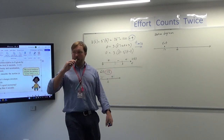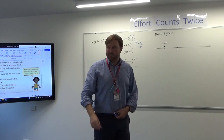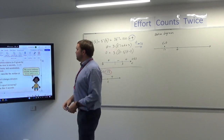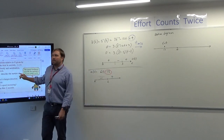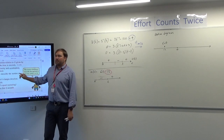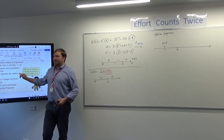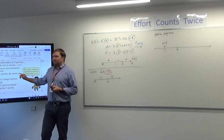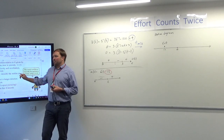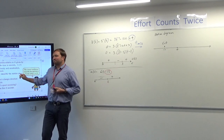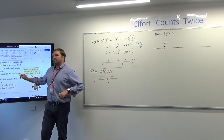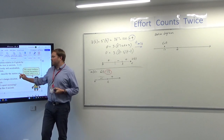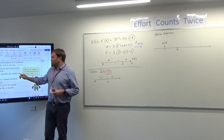So the answer to that part is: the particle is moving at 9 metres per second to the right, accelerating at 12 metres per second squared to the left — or equivalently, acceleration of negative 12.